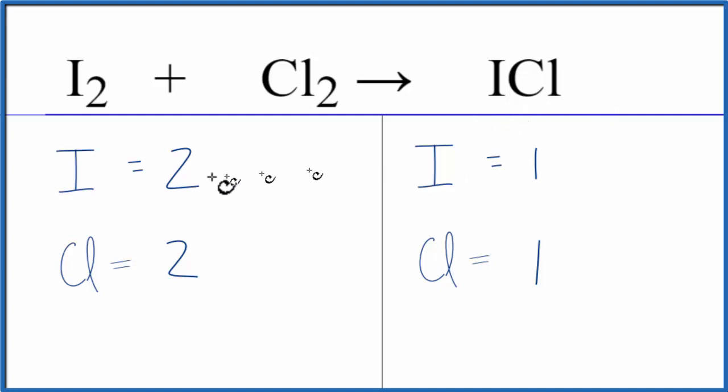So to get two iodines and two chlorines on this side, we only have one of each. I could change the coefficient, two, in front. Now that one times two, that would equal two. So I balance the iodines.